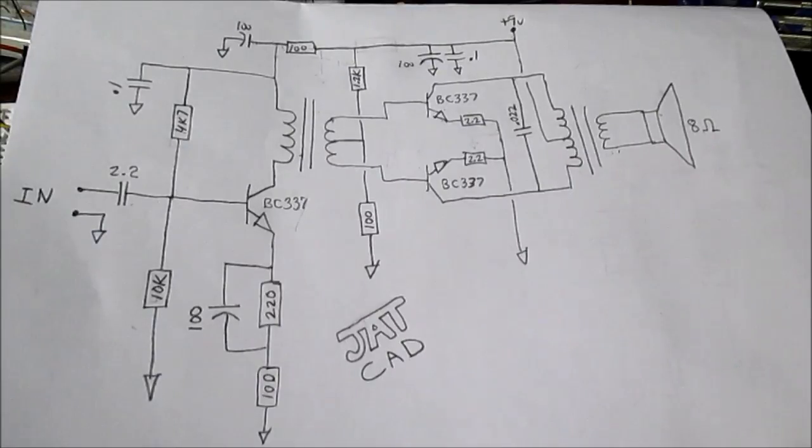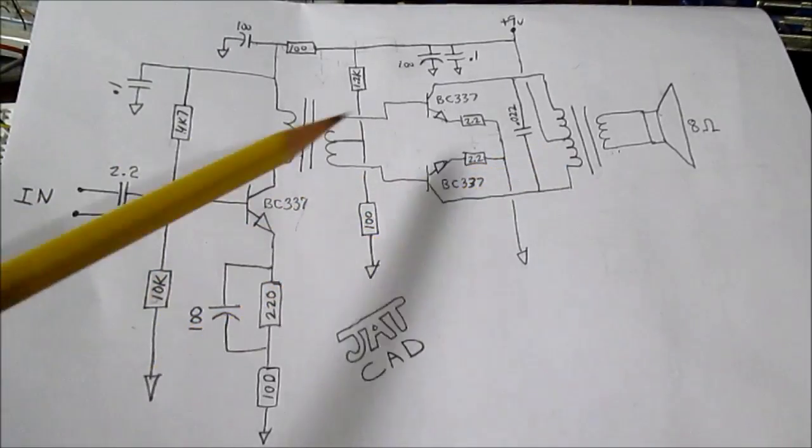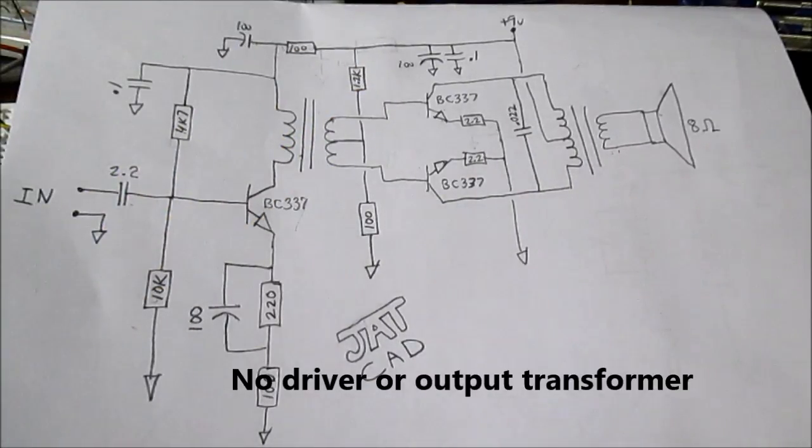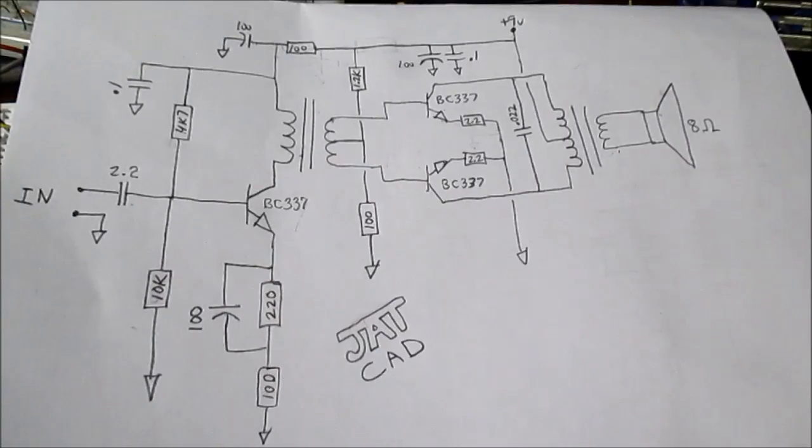It's a fairly cheap and easy amplifier design with push pull output. On the bill of materials it kept the part count low. In manufacturing cost is everything, so they try to minimize the cost. Though I would think later on that getting rid of the transformers would be a big plus, and it was. But they seemed to hold on to them in transistor radios a lot longer. Although I do remember one transistor radio had a complementary type output with NPN and PNP silicon transistors, and it was a really cheap radio. So maybe by that time in the mid 70s they were starting to pull away from this.